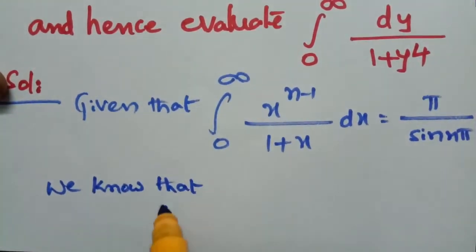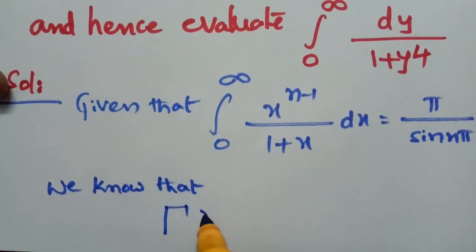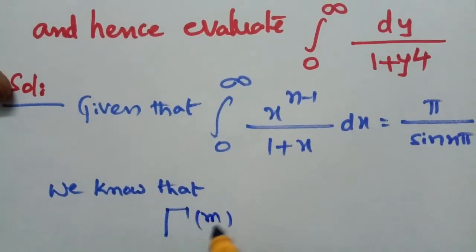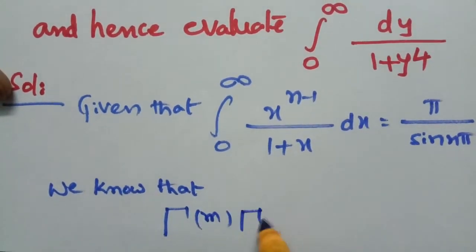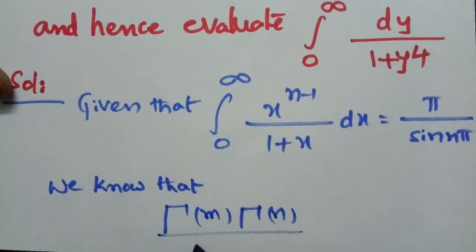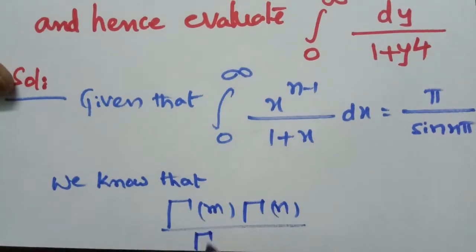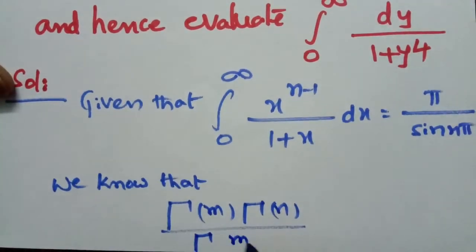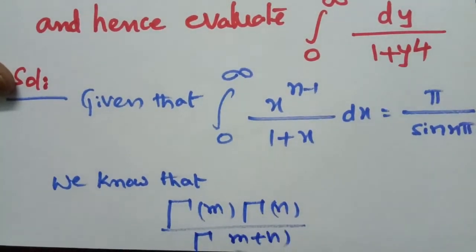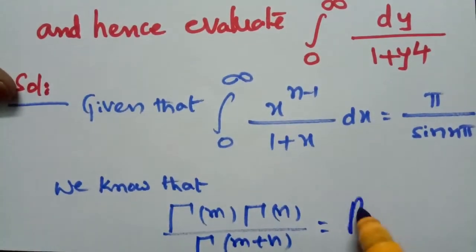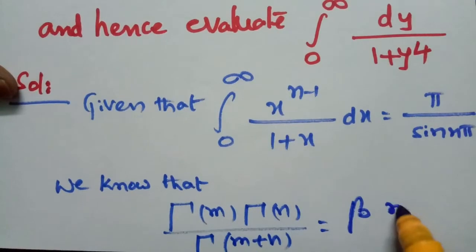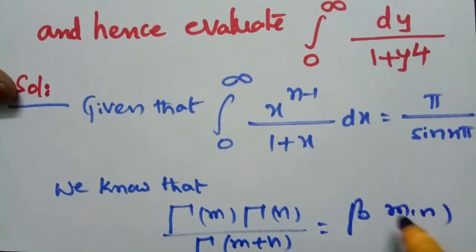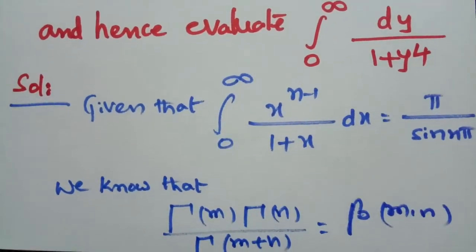Solution: given that the integral from 0 to infinity of x to the power (n minus 1) divided by (1 plus x), dx, equals pi by sin(n·pi). Therefore, we know that beta(m, n) equals gamma(m) times gamma(n) divided by gamma(m plus n).